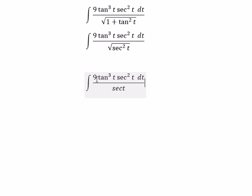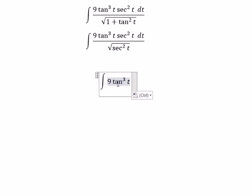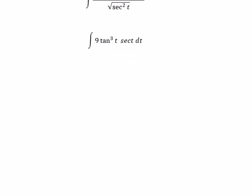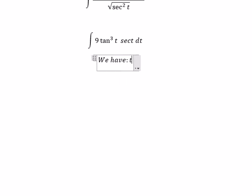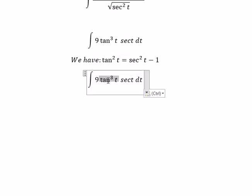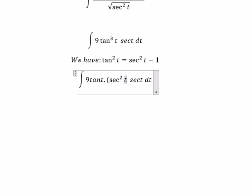Dividing, we get 9 multiplied by tan t to the power of 3, multiplied by sec t dt. Next, we use the identity tan squared t equals sec squared t minus 1, so we substitute tan t with the square root of sec squared t minus 1.